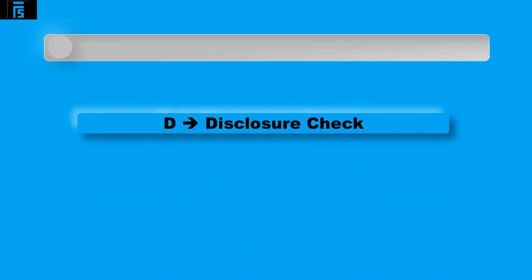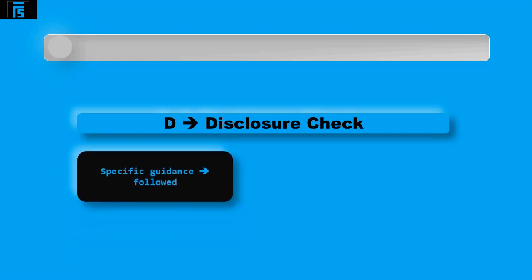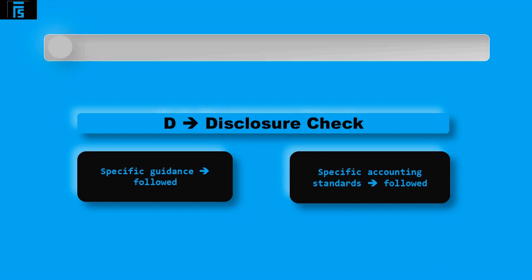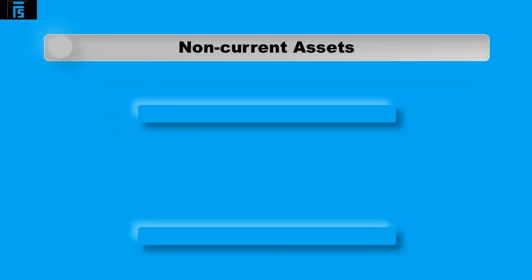D is Disclosure Check — the auditor needs to ensure any specific guidance on how the balance or disclosure is formed and presented has been followed. They need to review any specific accounting standards relating to the area of the financial statements and ensure they have been followed. With these general procedures covered, we can now look at some specific balances, starting with Non-Current Assets.